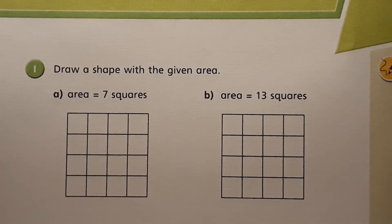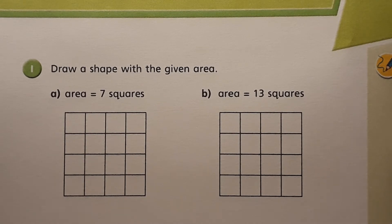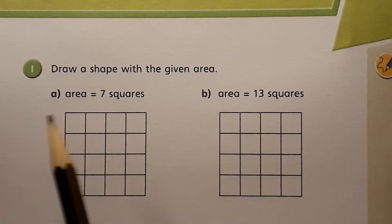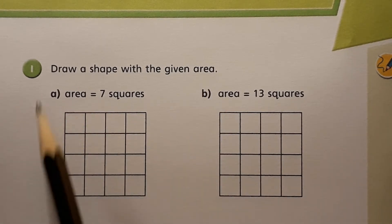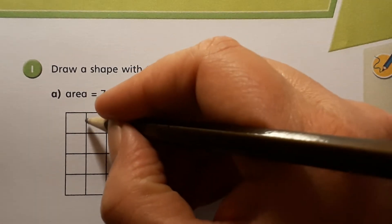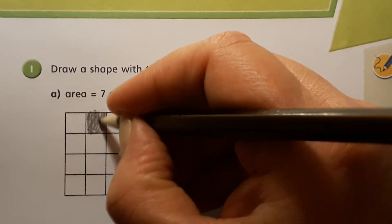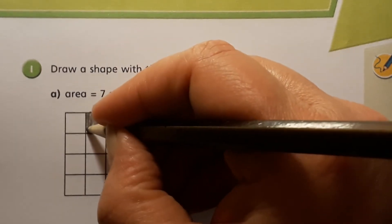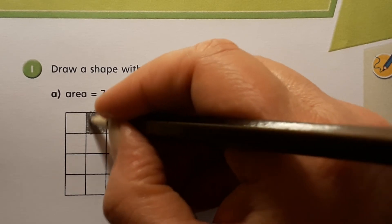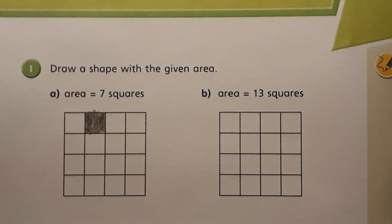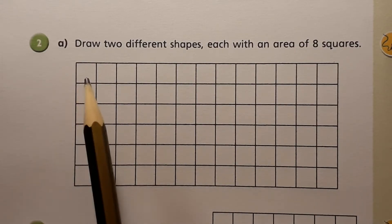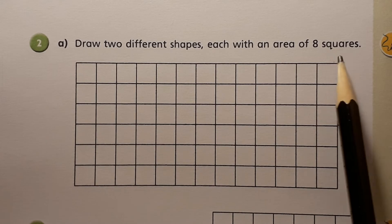I think you're going to find most of the work today straightforward. If you're asked to draw a shape with a given area — so the area for question one A is seven squares — you'll count in a square. I've drawn a shape with an area of one square, and you will continue to draw shapes with areas of seven squares, then thirteen squares, and then draw two different shapes each with an area of eight squares.